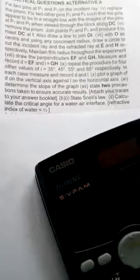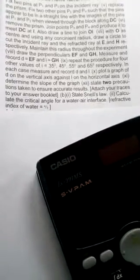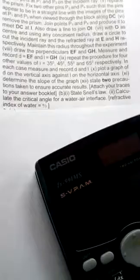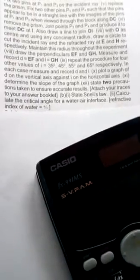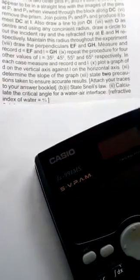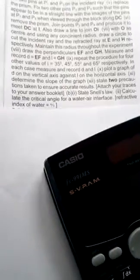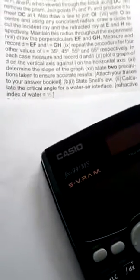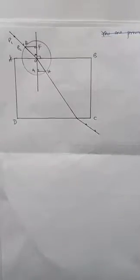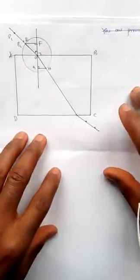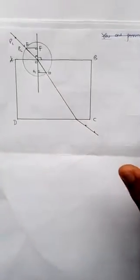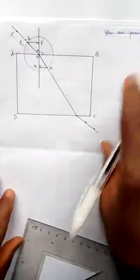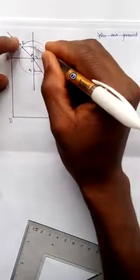In each case, measure and record. Plot a graph of d on the vertical axis against i on the horizontal axis. Determine the slope of the graph. State two precautions taken to ensure accurate results. State Snell's law. Calculate the critical angle for a water-air interface. Now guys, having seen the question and listened to the whole thing, the most important thing we ought to do is to find EF and GH.